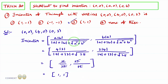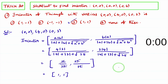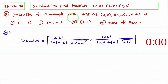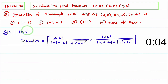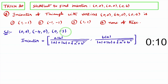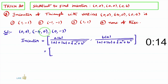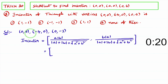Now we will do one more problem to understand this more clearly. For the second problem, the given vertices are (0,0), (-4,0), and (0,-3). You can observe that these are of the form (0,0), (a,0), (0,b), where a = -4 and b = -3.